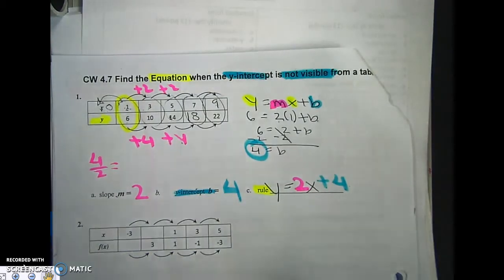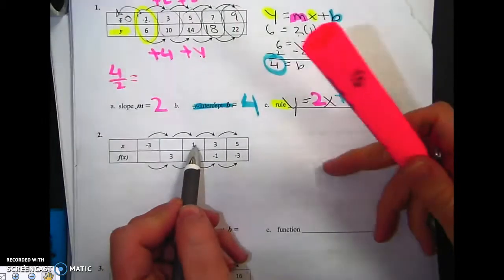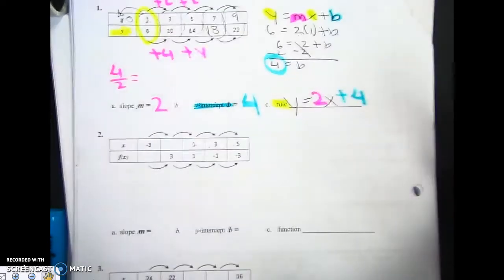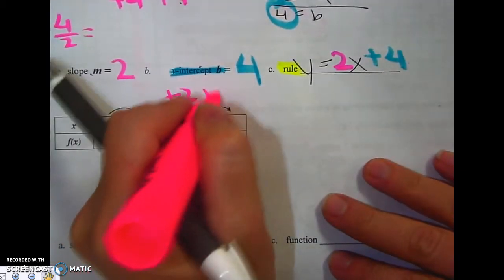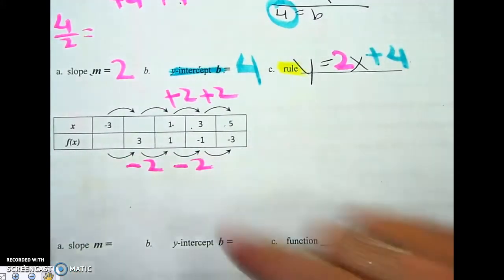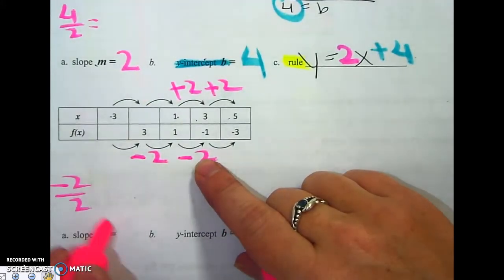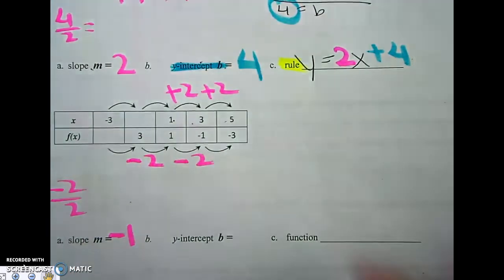Let's do the next one. So let's see. Plus 1, 3, 5. I'll make that a little bit bigger. So that's plus 2, plus 2. This is minus 2, minus 2. 2, negative 2 over 2 is negative 1. I've got my slope.